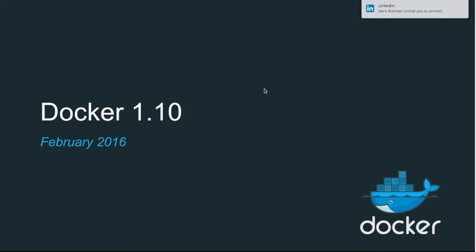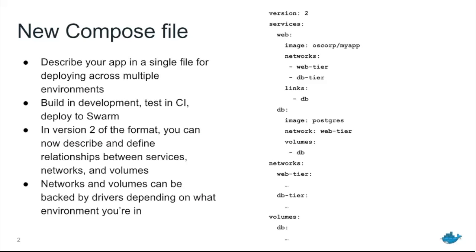The first thing in Docker 1.10 is a new Compose file. If you've used Compose before, Compose is essentially a way of describing an application in a single file — all of the containers that comprise your application and how they connect together. In a single command, you can boot up this application and have it running instantly, without typing all of the separate commands.